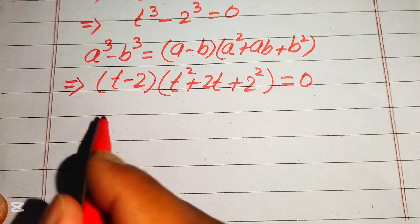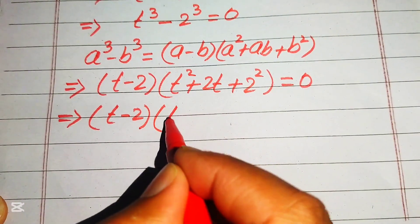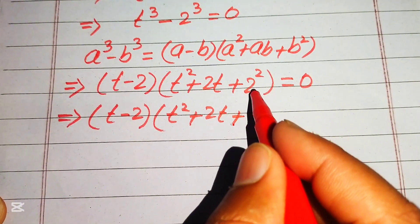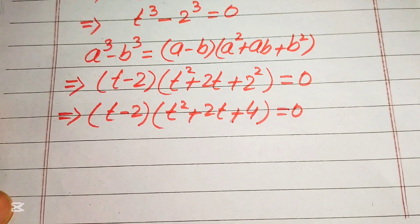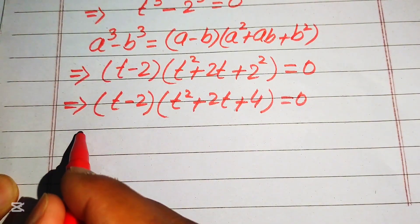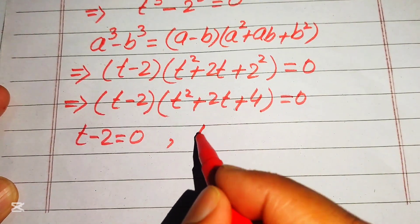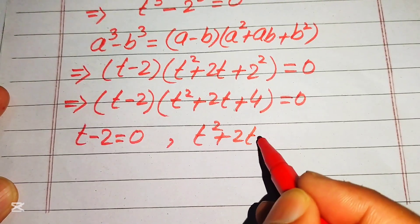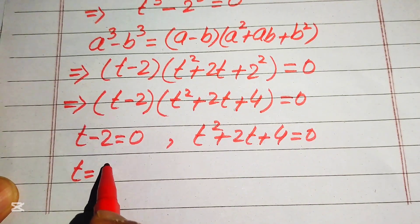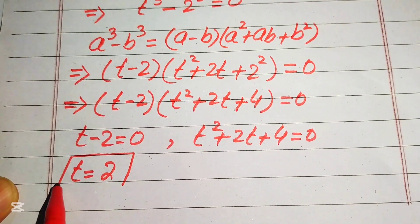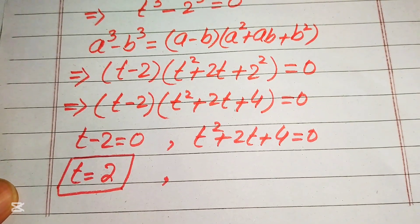We write the equation as (t minus 2)(t squared plus 2t plus 4) equals 0, since 2 squared equals 4. We divide this into two cases. Case one: t minus 2 equals 0, giving t equals 2. This is the first, real root of the given equation.